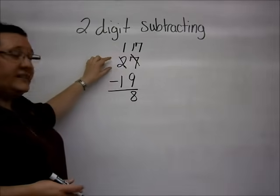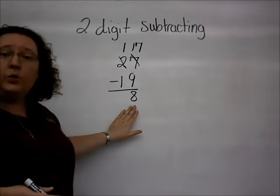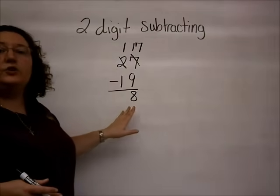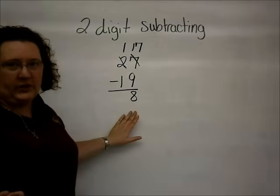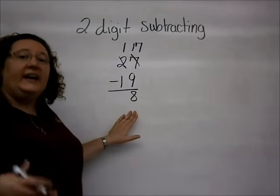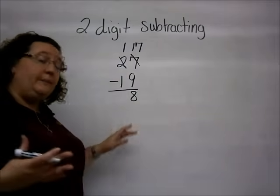1 minus 1 is 0, and we do not write the 0 there. We leave it alone. So, our original problem, 27 minus 19, would equal 8. This is in the traditional way, the way that most of us learned how to subtract numbers. Let's take a look at it using some mental math.